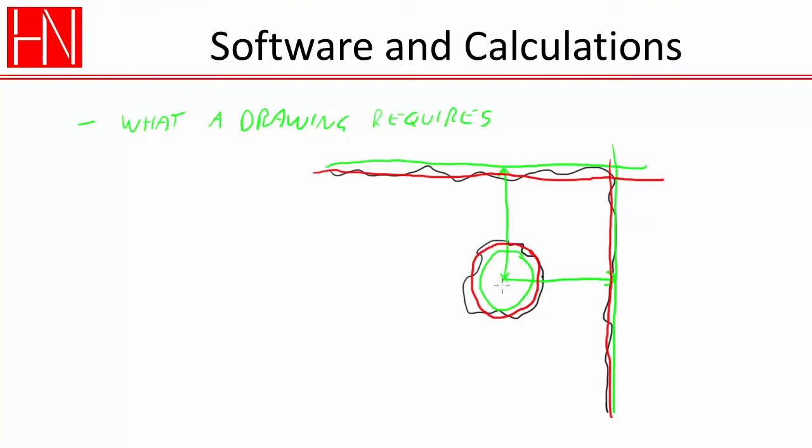And so in principle, that leaves us with a different center. The coordinates that, for example, a coordinate measuring machine would tell us would be based on this distance and this distance. So the red line is what a coordinate measuring machine—we also call it the CMM—